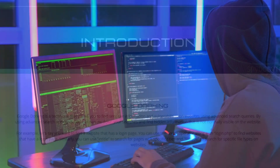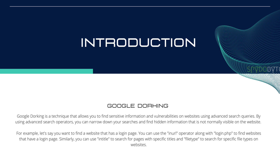What is Google Dorking? Google Dorking is a technique that allows you to find sensitive information and vulnerabilities on websites using advanced search queries. By using advanced search operators, you can narrow down your searches and find hidden information that is not normally visible on the website. For example, you can use the InURL operator along with 'login.php' to find websites that have a login page. Similarly, you can use Intitle to search for pages with specific titles, and filetype to search for specific file types on websites.